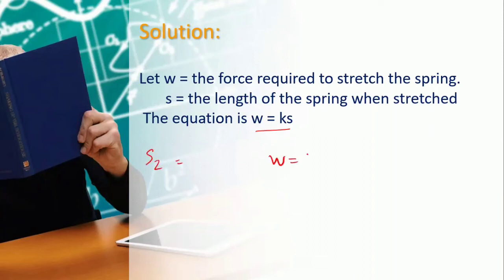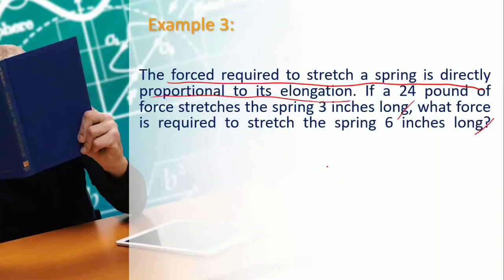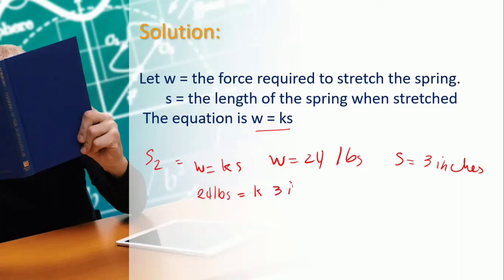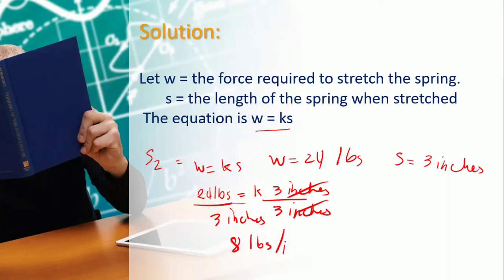Step one: W = kS. Step two: find k. Given W = 24 pounds and S = 3 inches: 24 = k(3). Divide both sides by 3: k = 24 ÷ 3 = 8 pounds per inch.